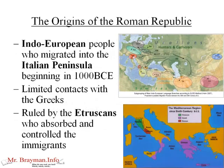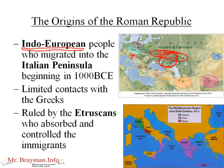Let's look at the origins of the Roman Republic. The Romans are an Indo-European people who migrated to the Italian peninsula beginning in 1000 BCE. Indo-European is an important term. The Indo-Europeans are from right around this area here — you've got some overlapping groups, but this covers all the Indo-Europeans through here.